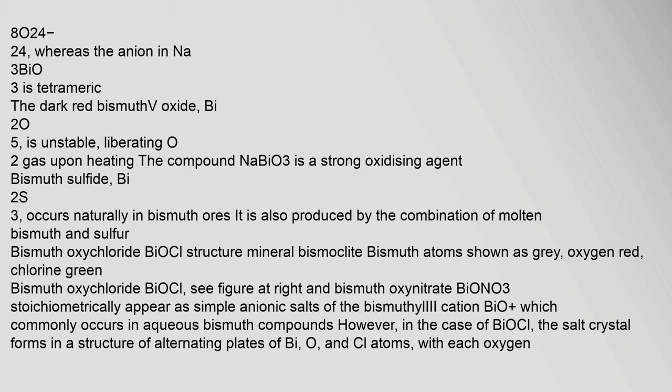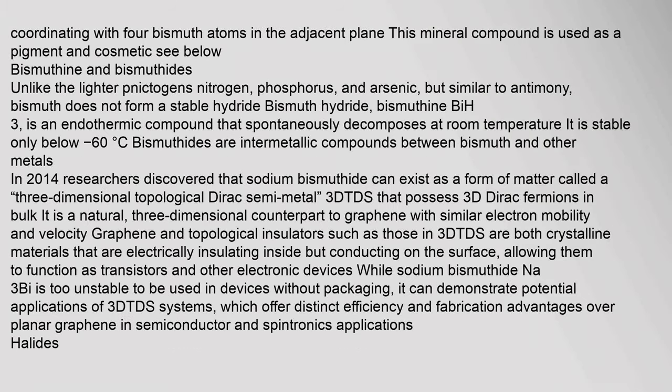Bismuth oxychloride (BiOCl) is a compound where bismuth, oxygen, and chlorine atoms are found as the mineral bismoclite. In bismuth oxynitrate (BiONO₃), these compounds stoichiometrically appear as simple anionic salts of the bismuthyl cation BiO⁺, which commonly occurs in aqueous bismuth compounds. In the case of BiOCl, the salt crystal forms in a structure of alternating plates of Bi, O, and Cl atoms, with each oxygen coordinating with four bismuth atoms in the adjacent plane. This mineral compound is used as a pigment and cosmetic.